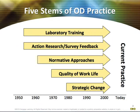First, we have laboratory training, which began in 1946 with the work of Kurt Lewin — we'll revisit Kurt Lewin later in the semester as well. It focused on the T-group, a small unstructured group in which participants learn from their own interactions and evolving group processes about issues including personal growth, interpersonal relationships, leadership, and group dynamics.